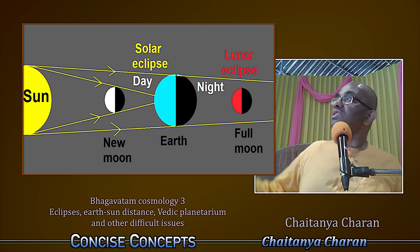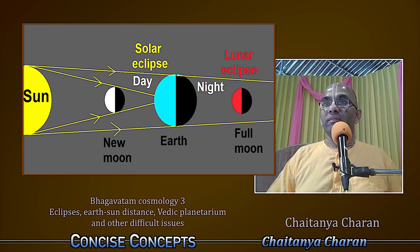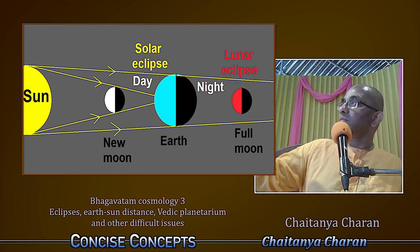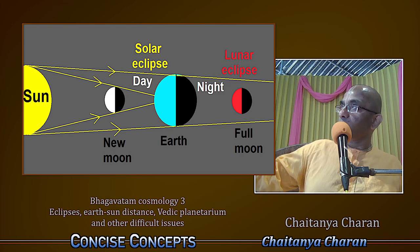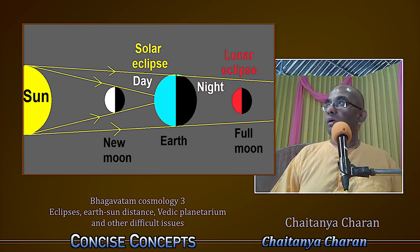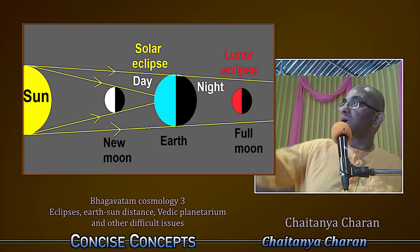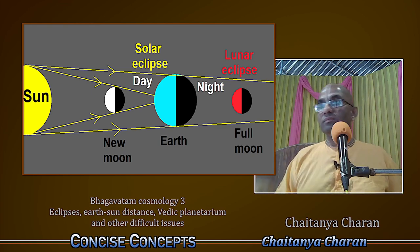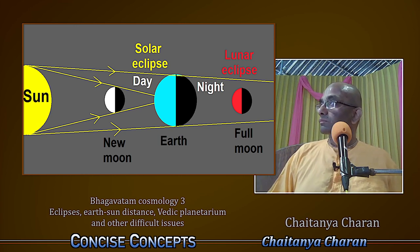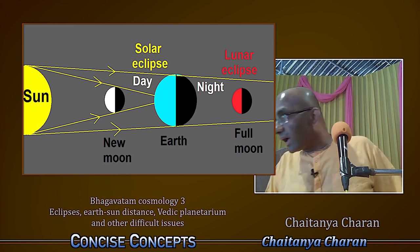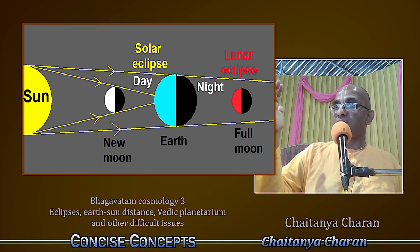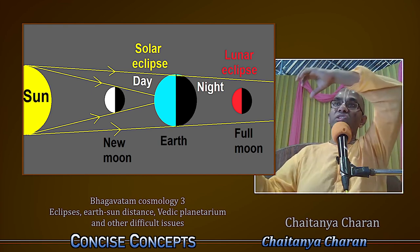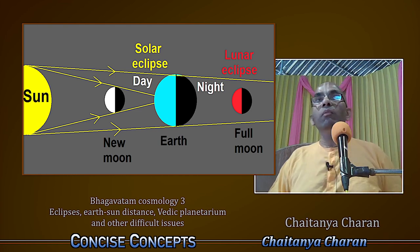This is the current scientific understanding of how eclipses happen. We have the Sun, the Moon, and the Earth. When the Moon comes in between the Sun and the Earth, the part where the Moon's shadow falls will not see the Sun — that is called a solar eclipse. For a lunar eclipse, the Moon reflects light from the Sun, but when the Earth is blocking the Moon, the Sun's light doesn't reach the Moon, and that's why we can't see it.